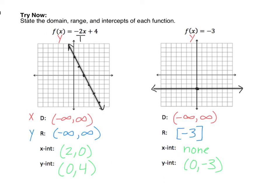Here are your solutions. For the first problem, the slope was negative 2. Remember that if the slope is not written as a fraction, we can place it over 1 — so negative 2 over 1 means down 2, right 1. The y-intercept was positive 4, so the first dot on your graph should be at 4 on the y-axis. Then go down 2 over 1. The domain is all real numbers — it points to the left forever giving negative infinity, and to the right forever giving positive infinity. The range is also negative infinity to positive infinity, since the line goes down and up forever.